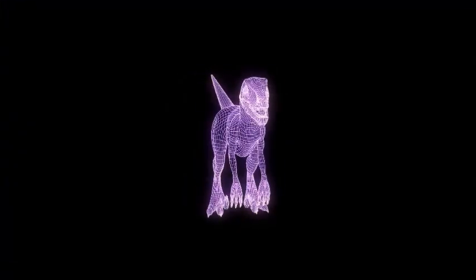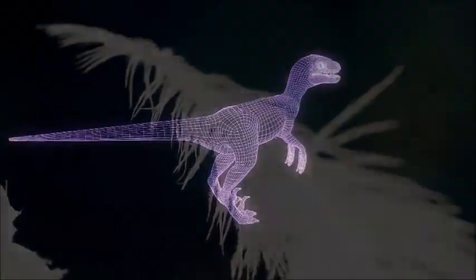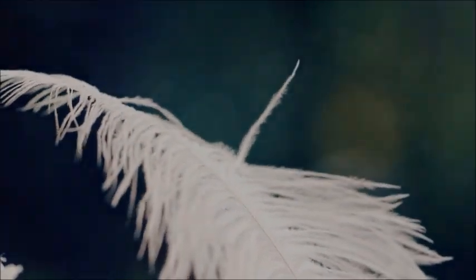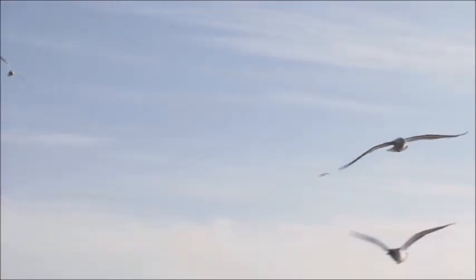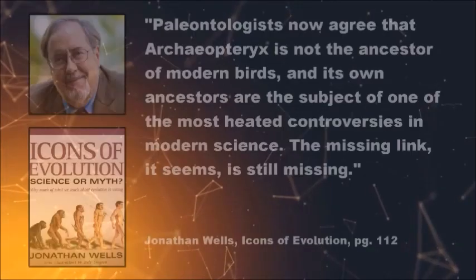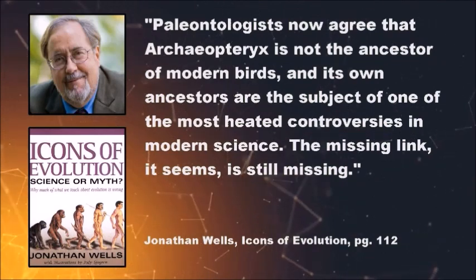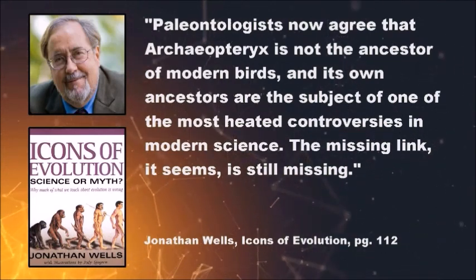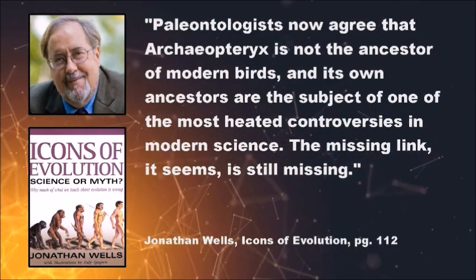This makes Archaeopteryx's ancestors younger than Archaeopteryx itself. Archaeopteryx was a true bird — from its bird feathers, to its bird bones, to its bird lungs, the fossil bears all the signs of having been a bird. There is no compelling reason to think it is an intermediate, and this is now acknowledged by the scientific community. Jonathan Wells says: 'Palaeontologists now agree that Archaeopteryx is not the ancestor of modern birds, and its own ancestors are the subject of one of the most heated controversies in modern science. The missing link, it seems, is still missing.'